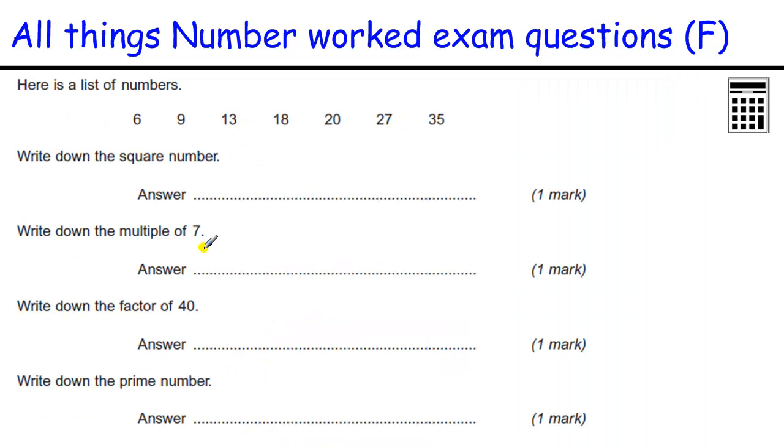Next question. Okay, which one's the square number? Well, 9 is the square number. That's 3 times 3. Multiple of 7. 7, 14, 21, 28, 35. So 35. Write down a factor of 40. 1, 40. 1 times 40, 2 times 20, 4 times 10, and 5 times 8. And 20 was there. Write down a prime number. So the numbers that only have one factor. Most prime numbers are odd numbers, apart from 2. So 9 isn't because we know it's a square number. 13 is a prime number. And the other two odd numbers we know, 3 goes into that and 5 goes into that. So the answer's 13.